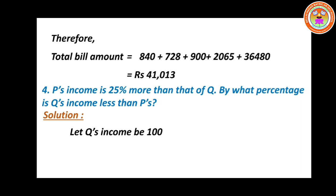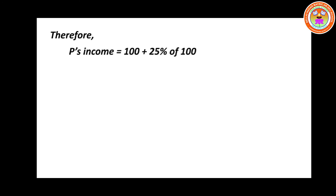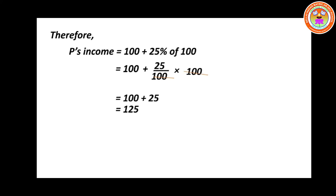Solution: Let Q's income be 100. P's income is 25% more than that of Q — 'more' means addition. So P's income equals 100 plus 25% of 100, which is 100 plus 25 divided by 100 into 100. Cancel 100 and 100, giving 100 plus 25, which equals 125.